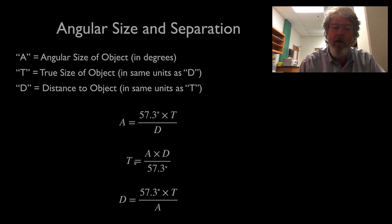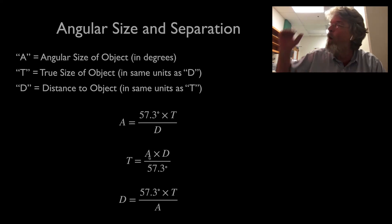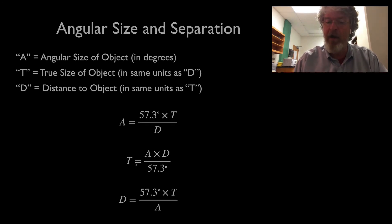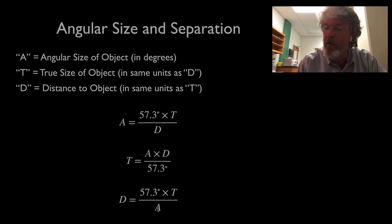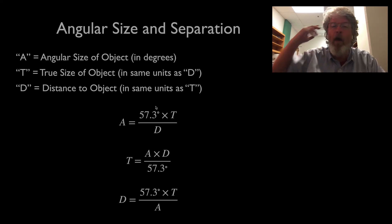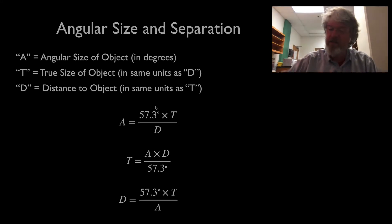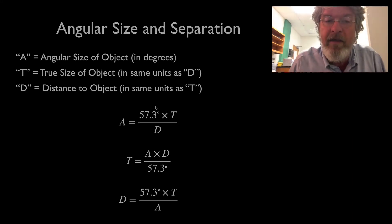You can rearrange that equation algebraically. If you know the angular size and the distance, you can find the true size. If you know the angular size and the true size, you can find the distance. With any two of the three quantities — angular size, true size, and distance — you can solve for the third.